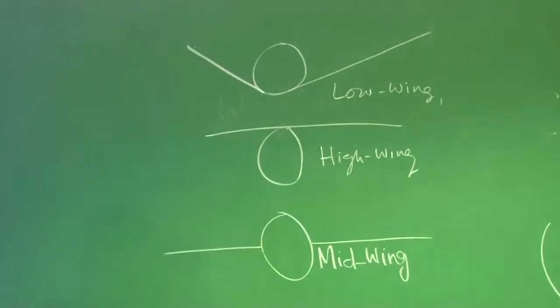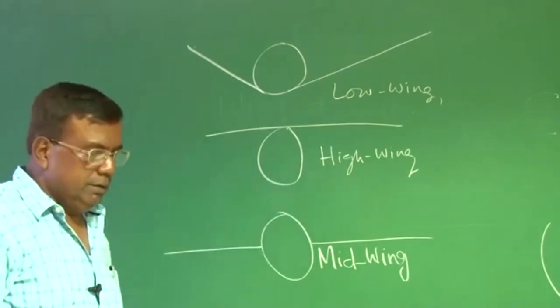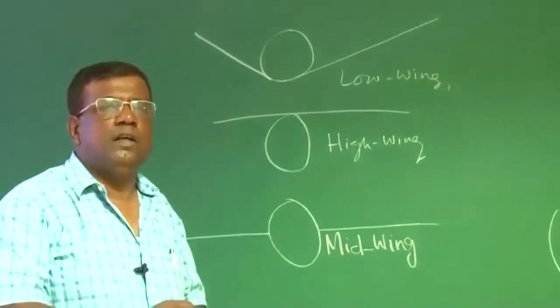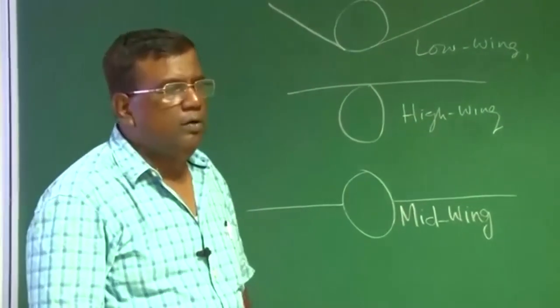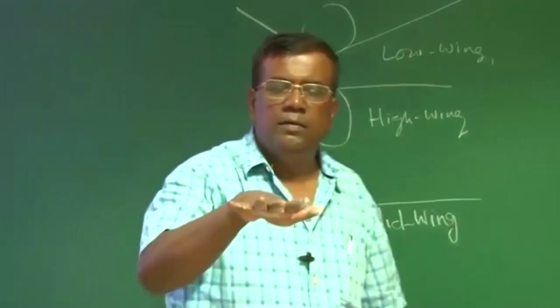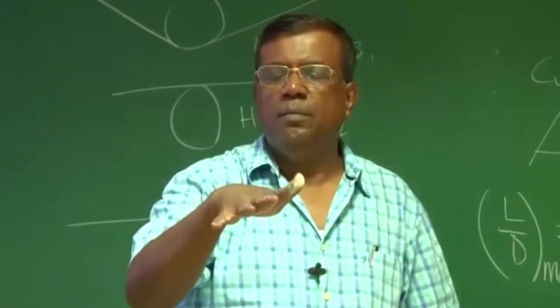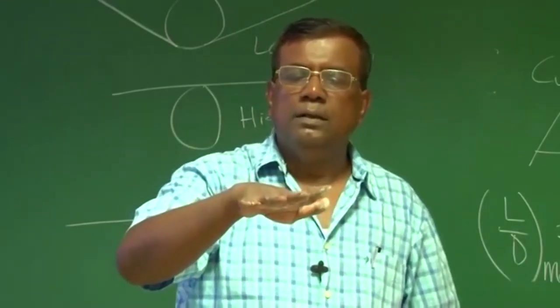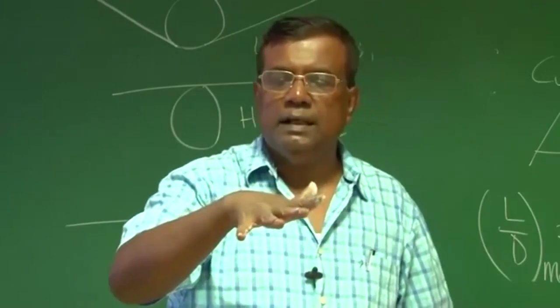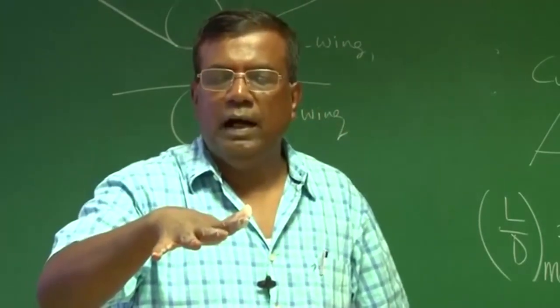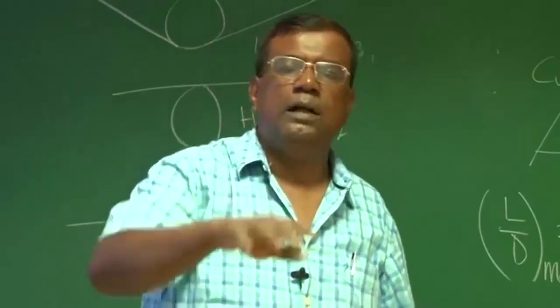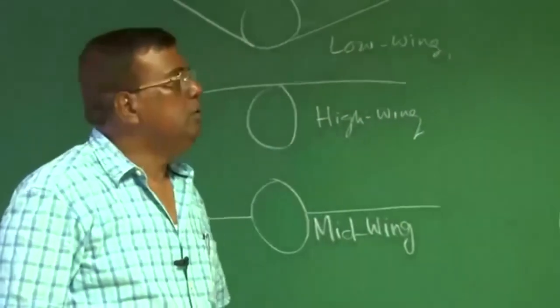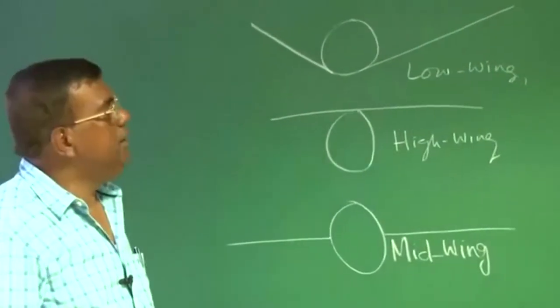You also know why such configurations are chosen aerodynamically from stability point of view, that a high wing will be laterally more stable as far as wing contribution is concerned. That is, if this is the high wing, lateral stability means if it banks, it should try to come back. It should have an initial tendency to come back. So what happens if the airplane banks? It starts sideslipping and because it is a high wing, the air will gust in and it will try to turn it back.